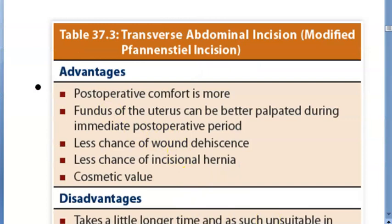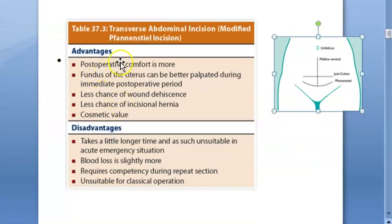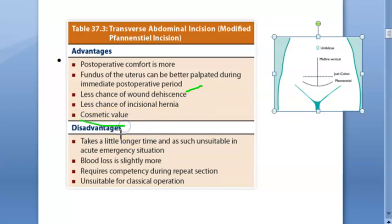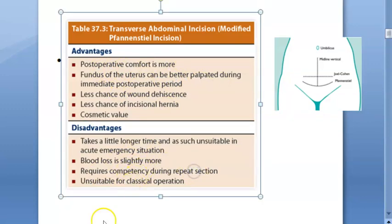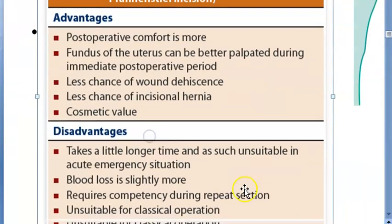The advantages of the Pfannenstiel incision include: post-operative comfort is greater; the fundus of the uterus can be better palpated during the immediate post-operative period; there is less chance of wound dehiscence; less chance of incisional hernia in the future; and good cosmetic value since the incision is placed low and is hidden. Post-operative care is also improved.